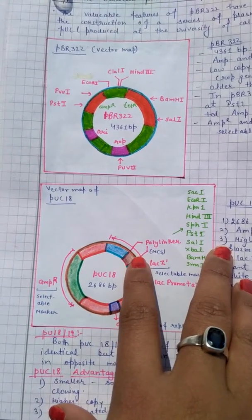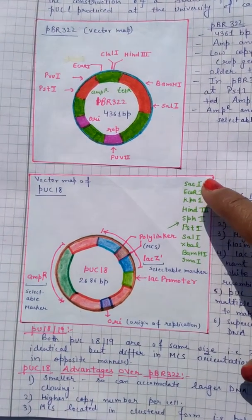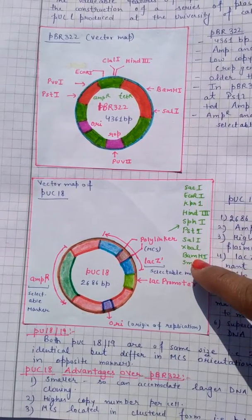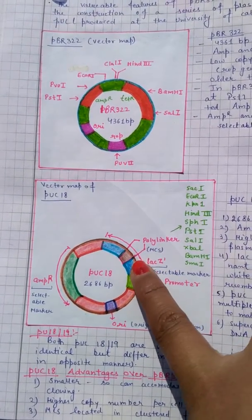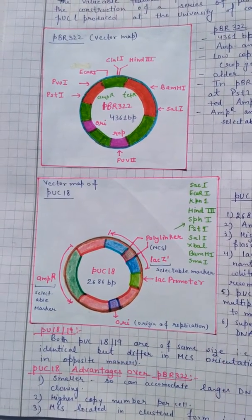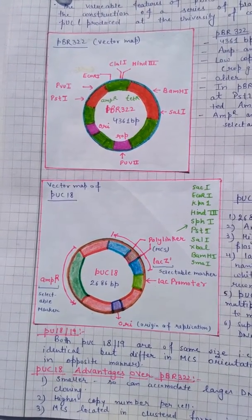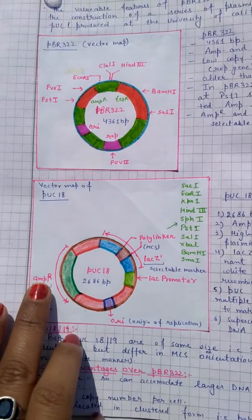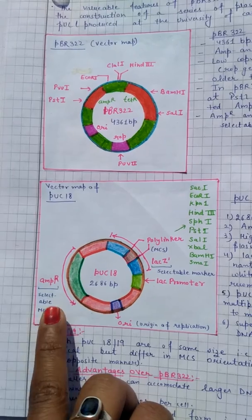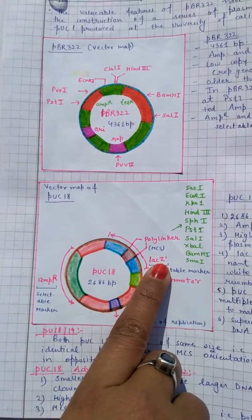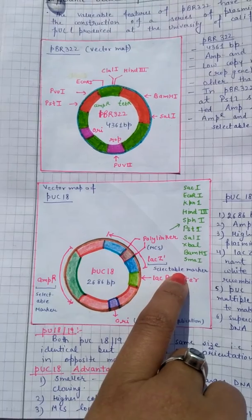The polylinker region contains all restriction sites linked together. These are specific for restriction enzymes such as SacI, EcoRI, HindIII, PstI, SalI, XbaI, and BamHI — all present in the same area. This is why it is known as a polylinker, though these are all multiple cloning sites where restriction enzymes can work to give specific cohesive ends for ligation. Ampicillin resistance is also present as a selectable marker in pUC18.